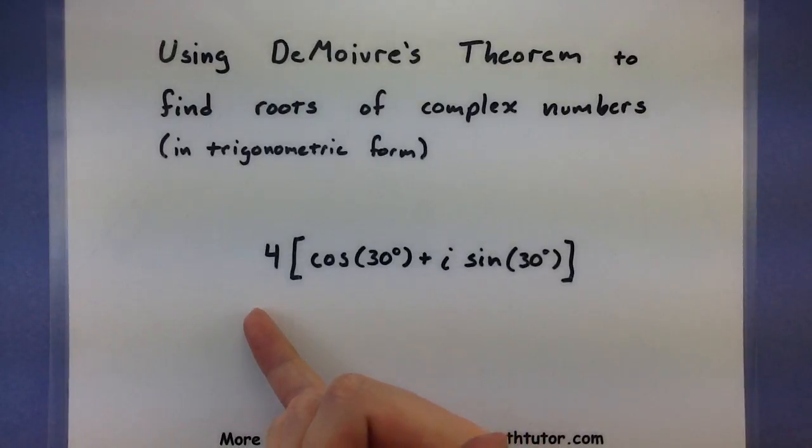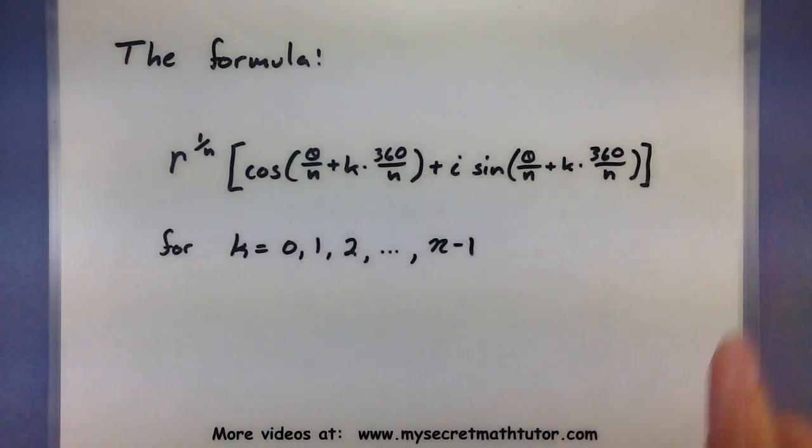Usually what we have is some sort of complex number written in trigonometric form like this, and we want to use de Moivre's theorem to go ahead and find the roots of it. Now, one thing I don't like about this is usually when you open up a math book and you try and look at the formula for this,